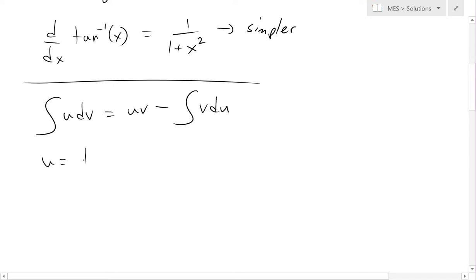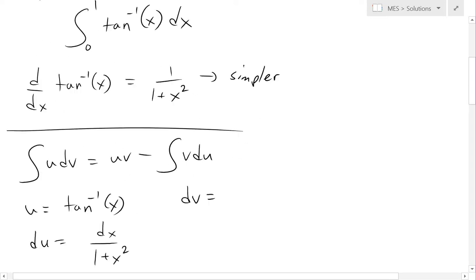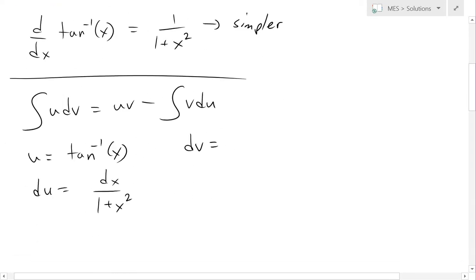So in this case, u will equal inverse tan of x. So now du equals dx over 1 plus x squared. We always have to have a dx; we're dealing with differentials like this. So now the dv equals, well, there's no other choice, so we just pick dx. And now the integral of this, that's v, is going to equal just x.